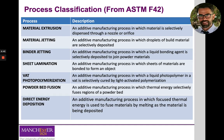VAT photopolymerization is also a very common additive manufacturing process. It uses a liquid photopolymer that is transformed into a solid through the action of light — UV, infrared, or a combination of both. Finally, powder bed fusion, which comprises both selective laser sintering and selective laser melting, uses high thermal energy to selectively fuse regions of a powder material — either metal or polymer — and is a critical technology for the automotive, aerospace, and medical industries.